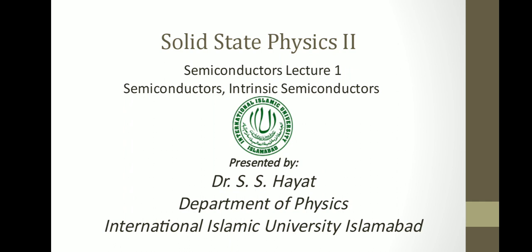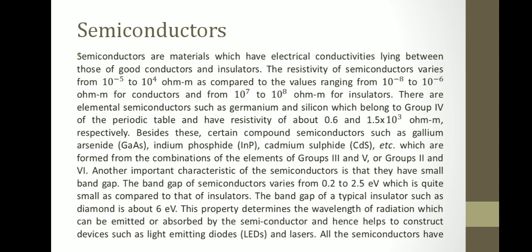Conductors are materials that can conduct electricity and heat, while insulators are materials which cannot conduct electricity and heat. Semiconductors are materials which can conduct electricity and heat with increasing temperature, with limited or controlled current flow. Semiconductors have electrical conductivities lying between those of conductors and insulators. The resistivity of semiconductors varies from 10⁻⁵ to 10⁴ ohm·meter, compared to 10⁻⁸ to 10⁻⁶ ohm·meter for conductors and 10⁷ to 10⁸ ohm·meter for insulators.